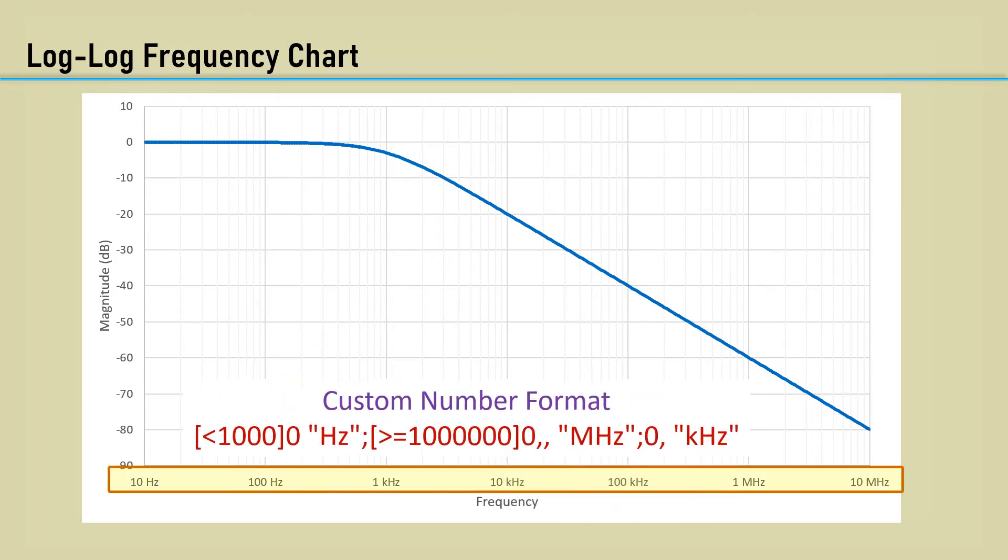I created a custom number format that labels the graph in hertz, kilohertz, and megahertz. It exploits the use of the Excel number formatting that uses conditional coding.